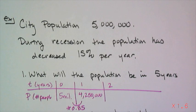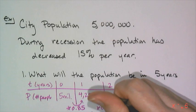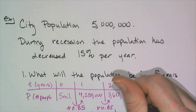At year two, I'm going to do the same thing. 15% of the people left, but I don't care about how many people left, I care about how many people are left over. So I'm going to multiply again by 0.85, and I get 3,612,500 people.